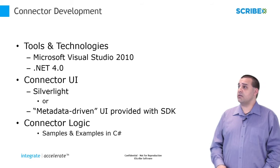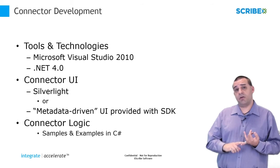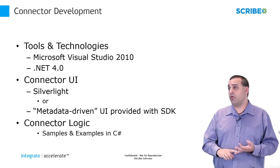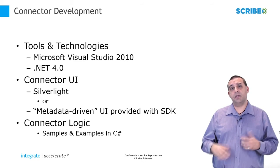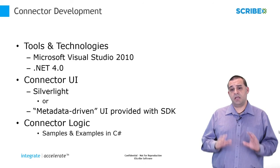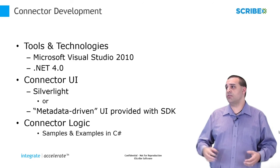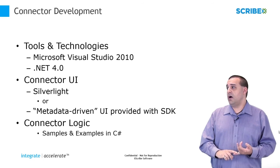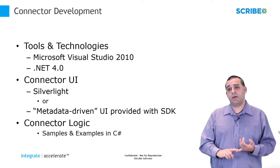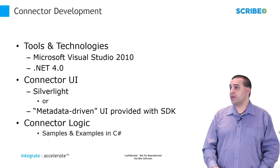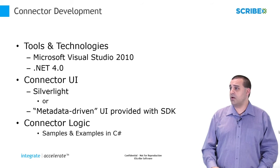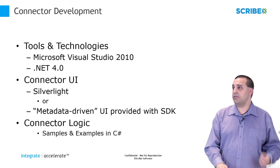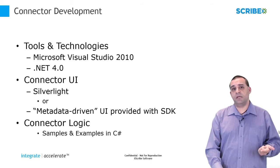What you'll need to use these connectors is Microsoft Visual Studio 2010 and .NET 4.0. The UI that we use with Scribe Online is Silverlight, so the connector is going to have to be Silverlight compatible, meaning you'll have to have Silverlight additions included in your Visual Studio. All of the connectors are done in C#, so that's what all of our samples are in.